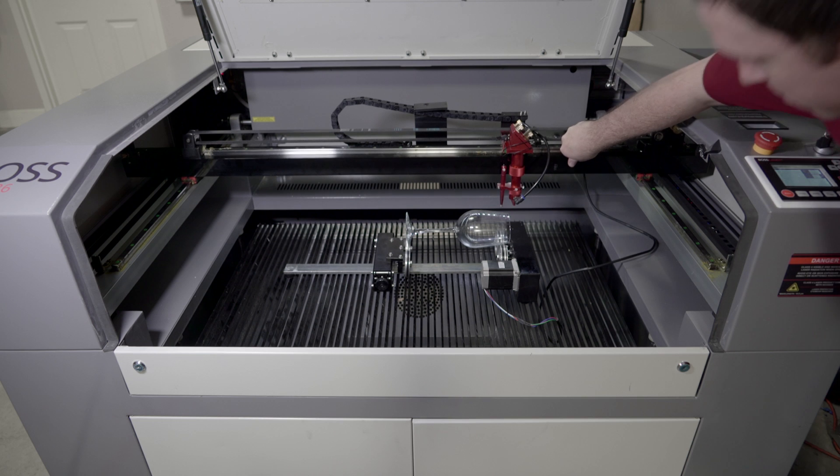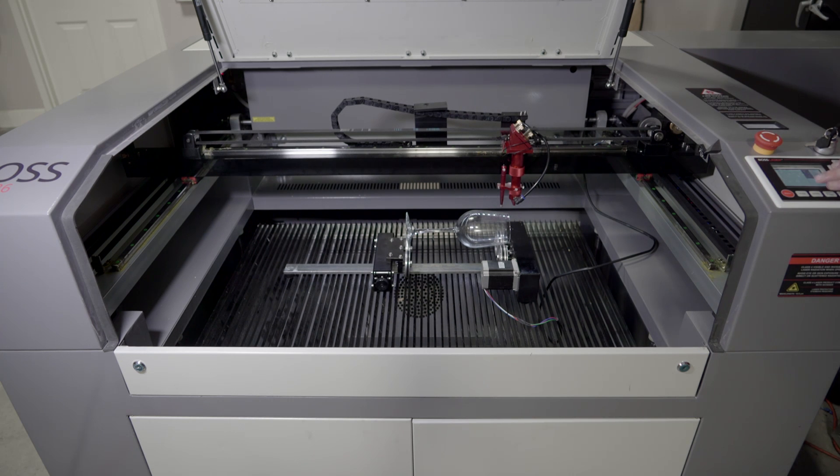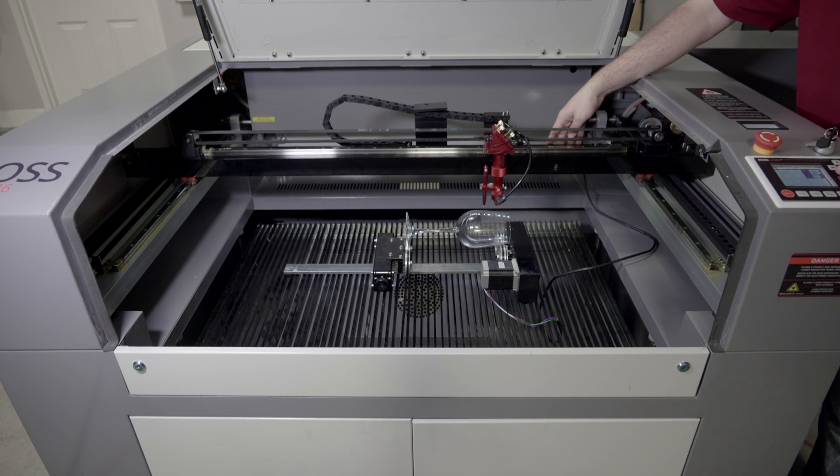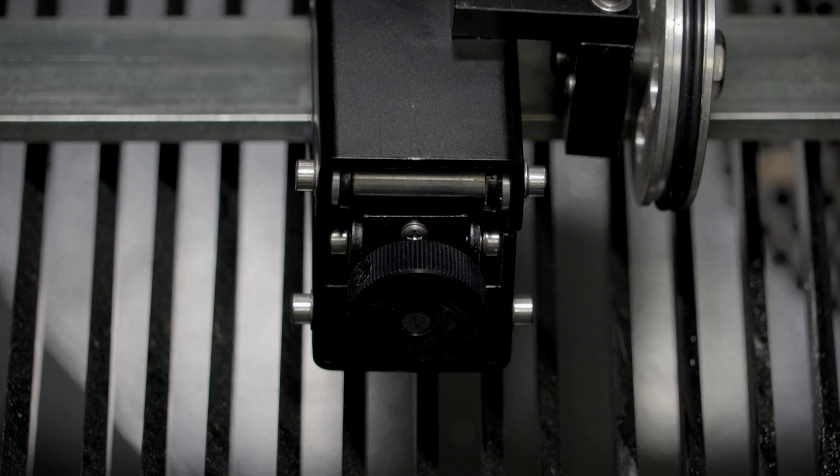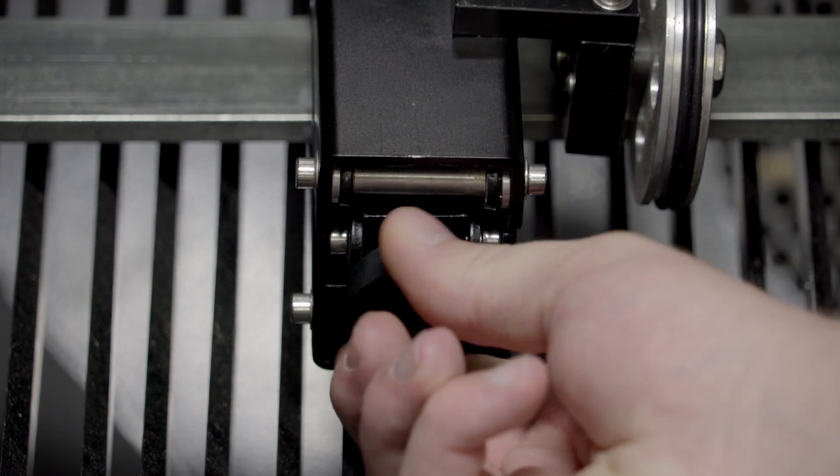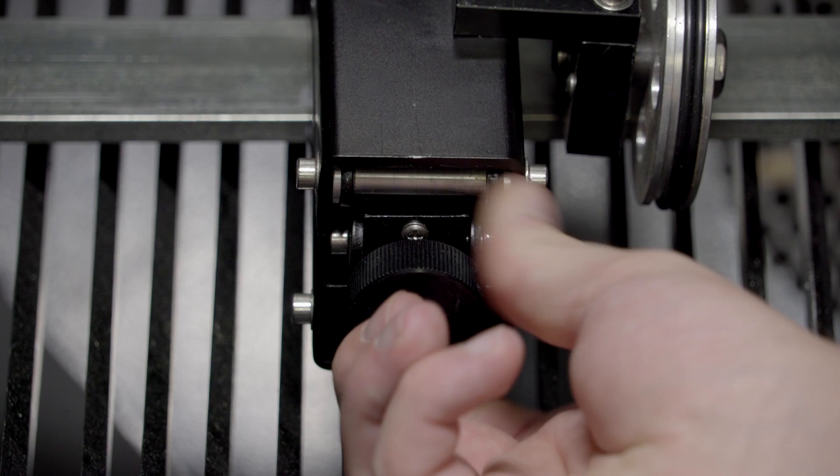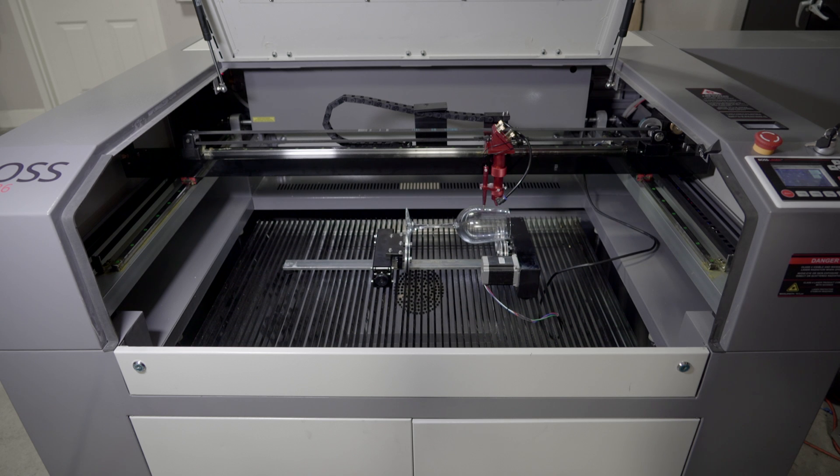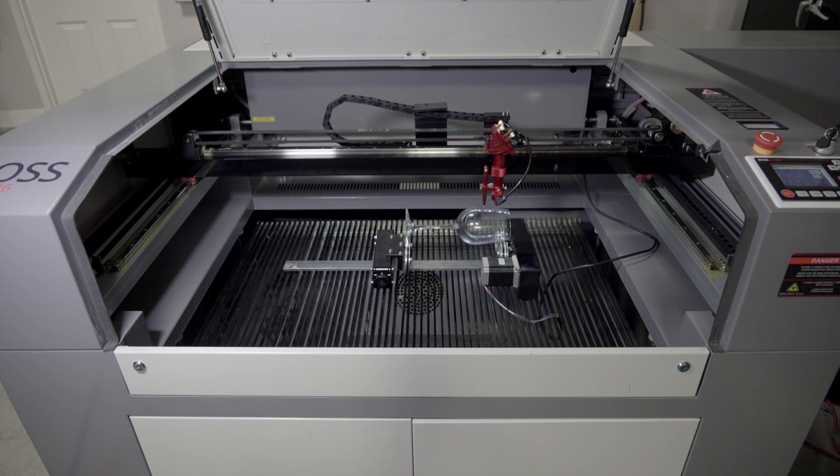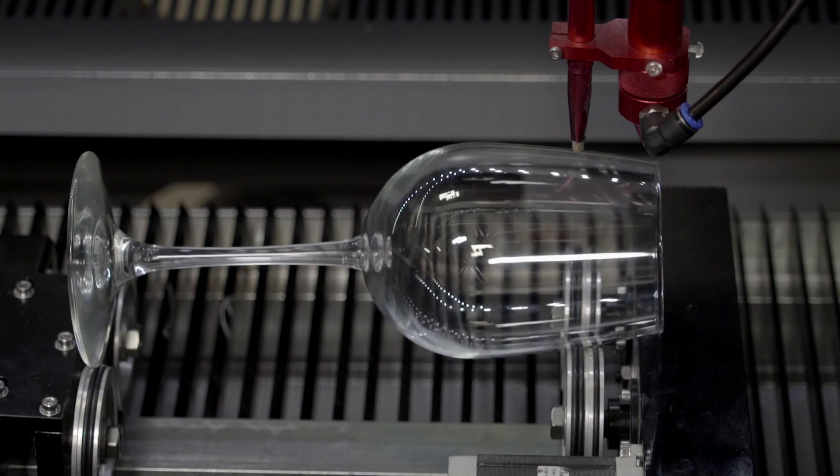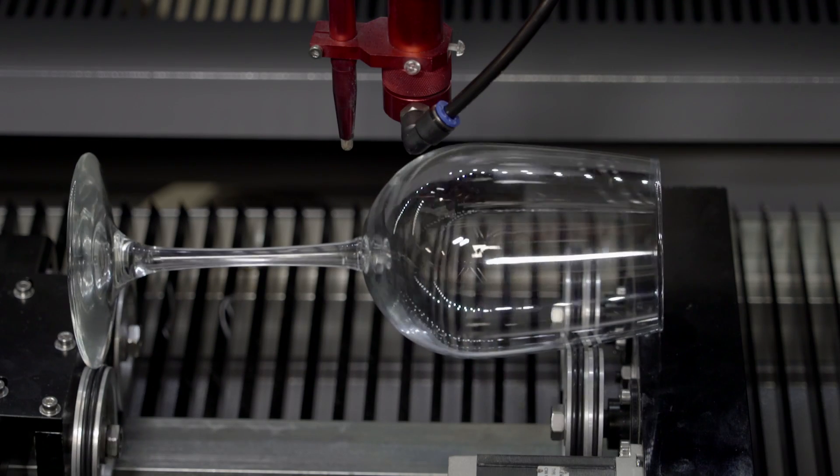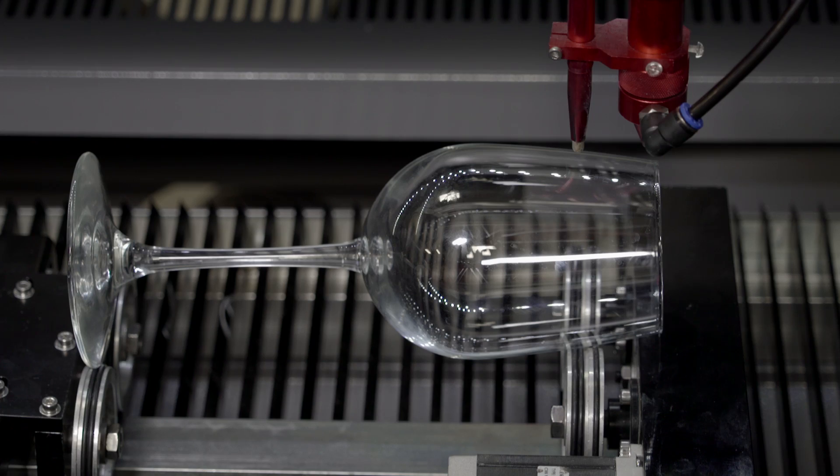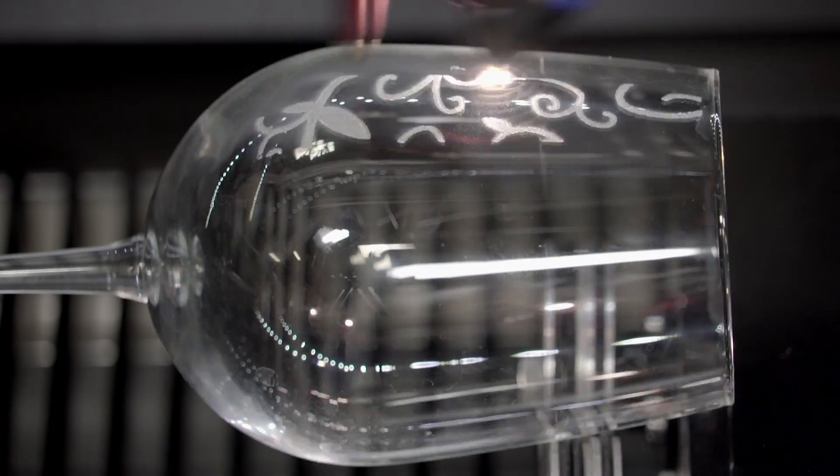Turn the knob on the side of the rotary opposite of the motor to level out your material. With the laser head positioned over the highest part of the object you're engraving, use the auto focus. Use the frame function to line up your engraving. Now all you have to do is press Start and let the laser run its job.